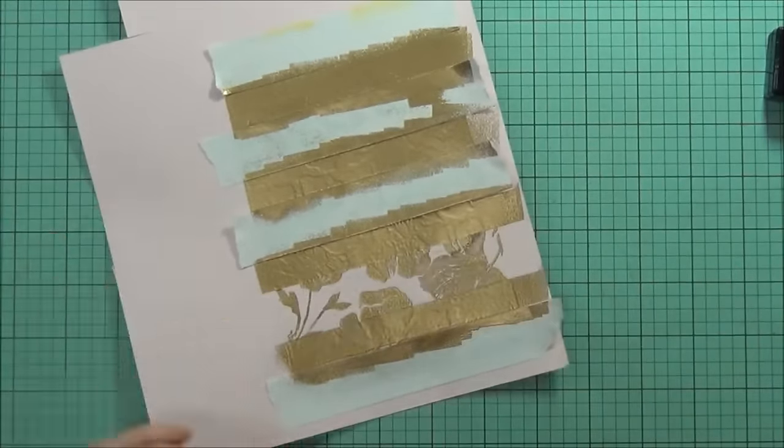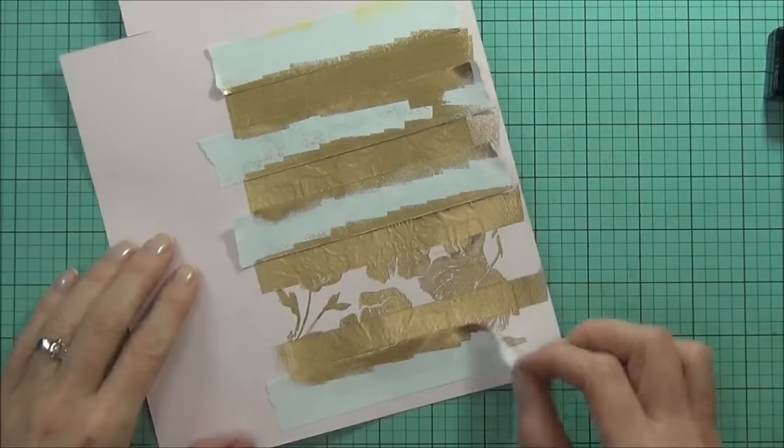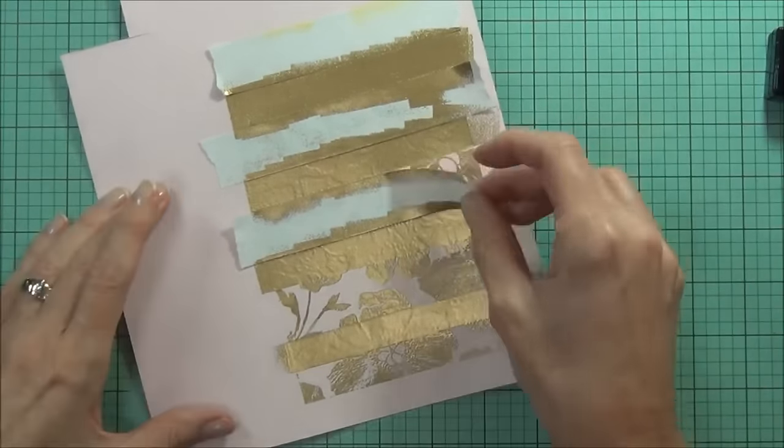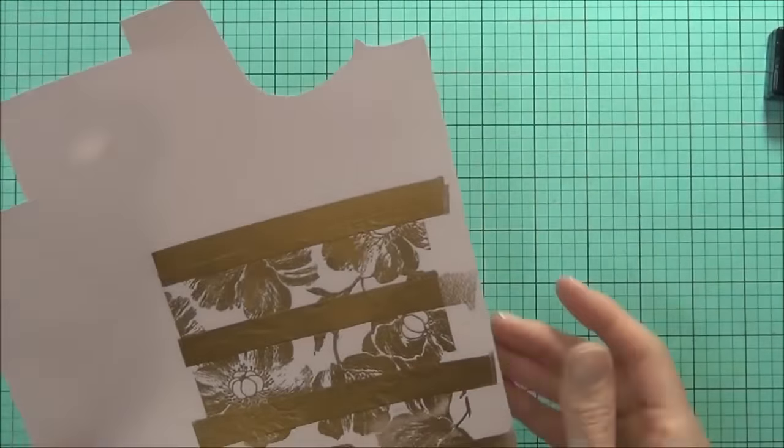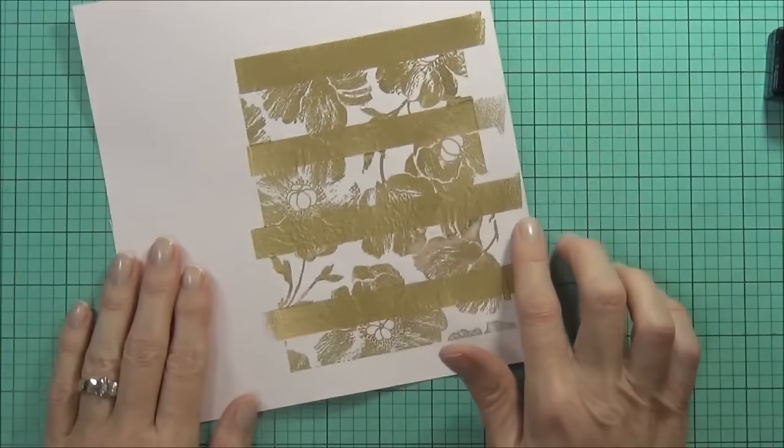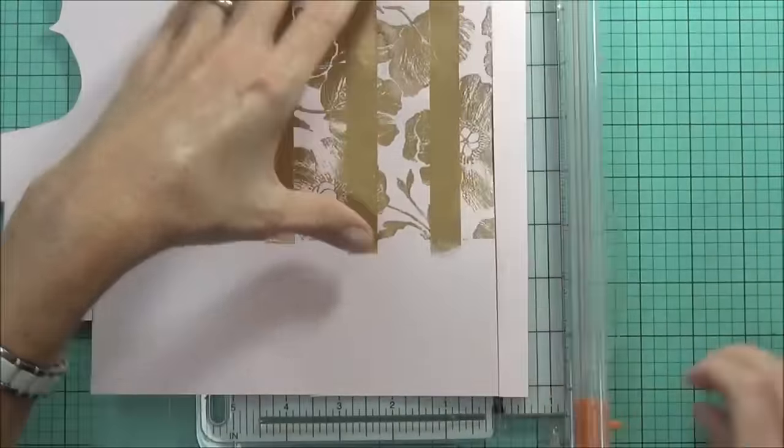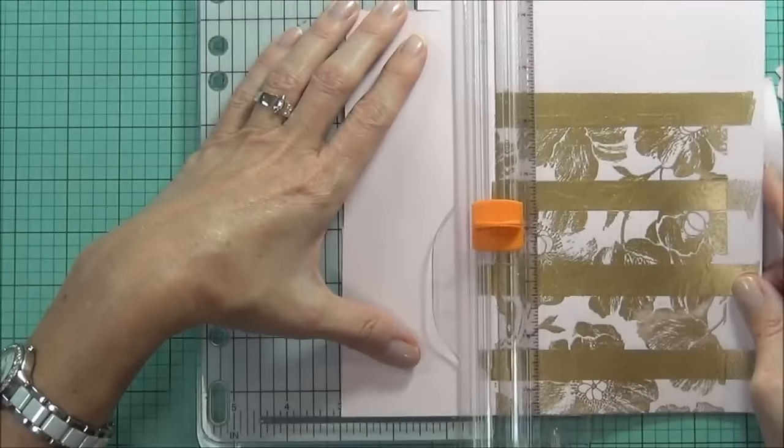So I'm just going to remove the masking paper now. I don't know if you can see it, but it has actually moved a little bit of gold embossing in a couple of areas. But that's okay, I'll sort that out or cover it up with the embellishments. So now I'm just cutting down the panel to fit the front of my card.